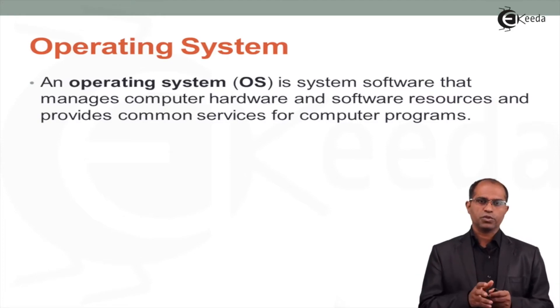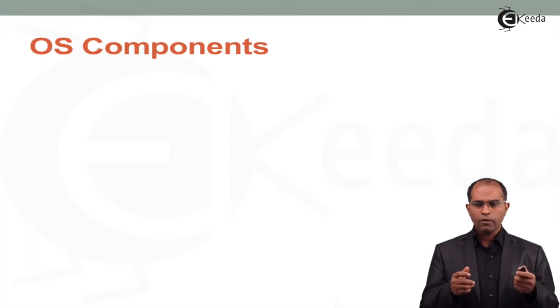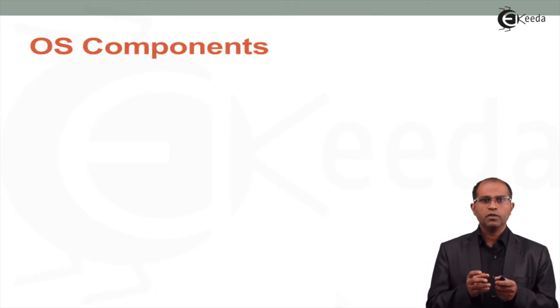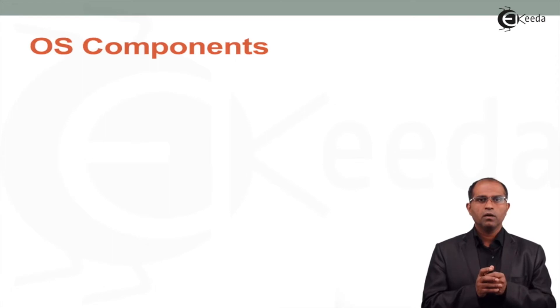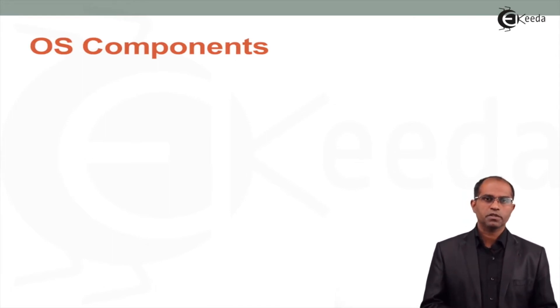Basically, an operating system is a system software which manages the computer hardware and software resources and provides common services for all computer programs. We can think about this particular operating system—you said it's an interface, well and good, but what are the various functionalities of this operating system?